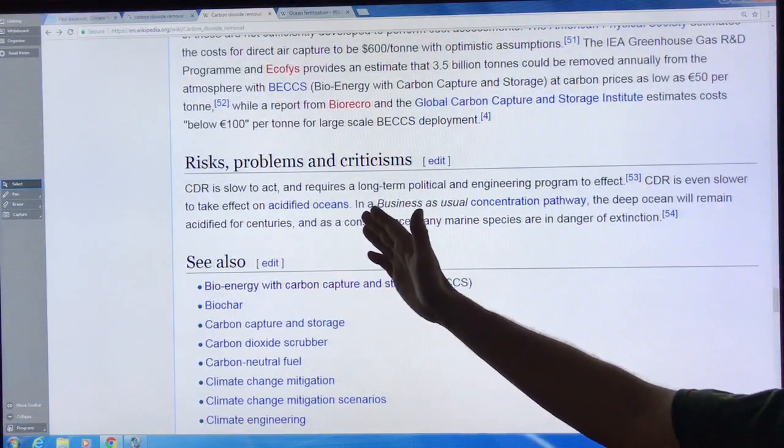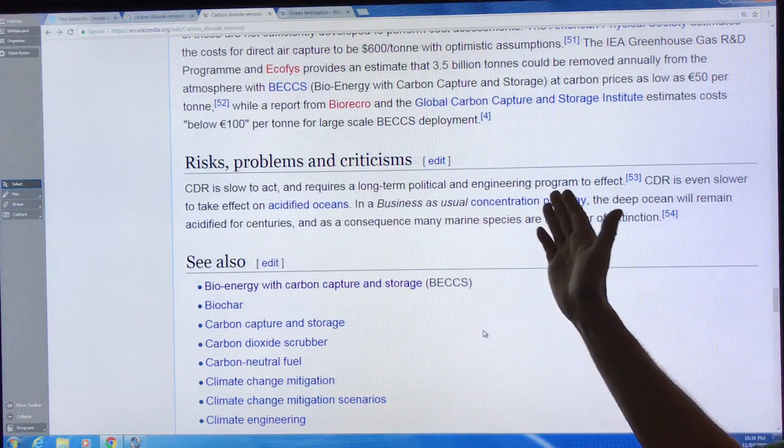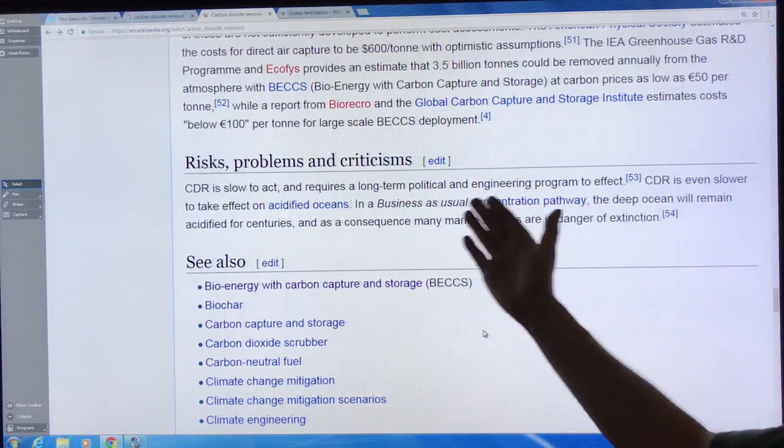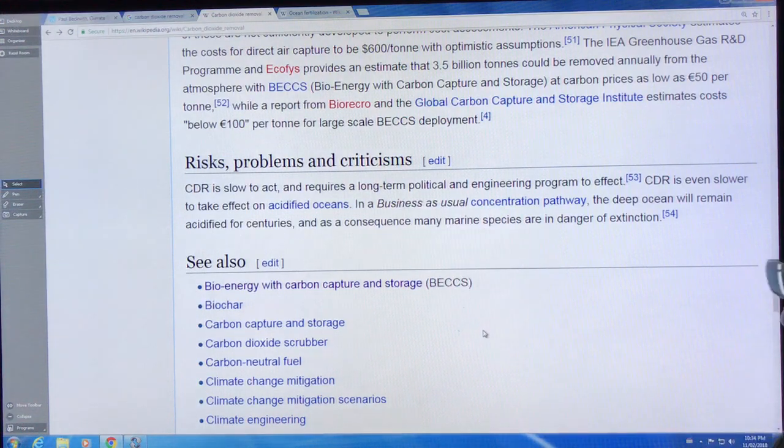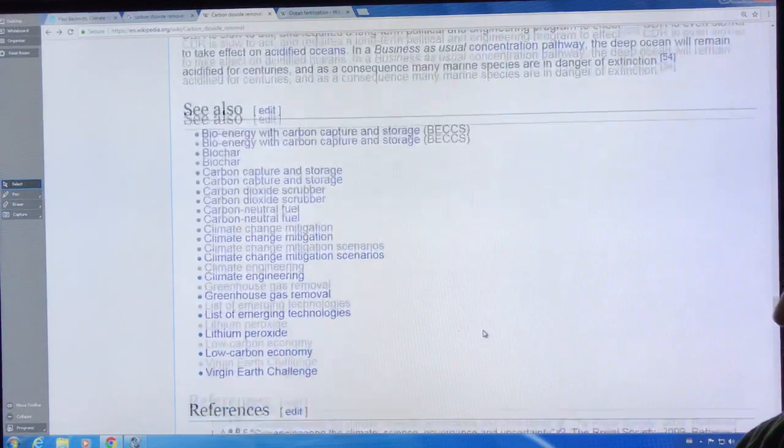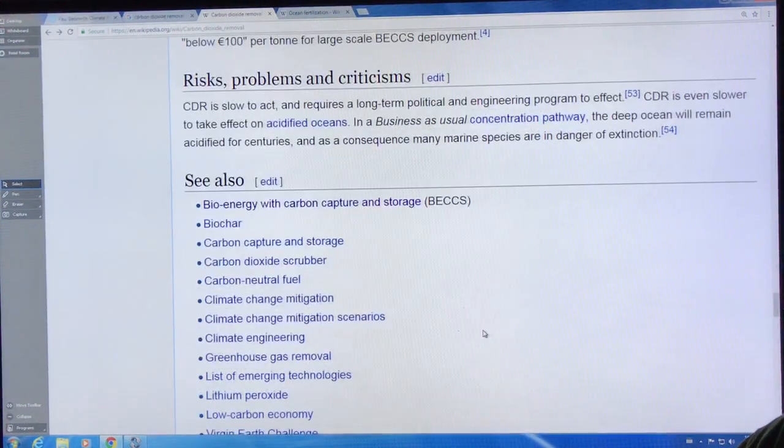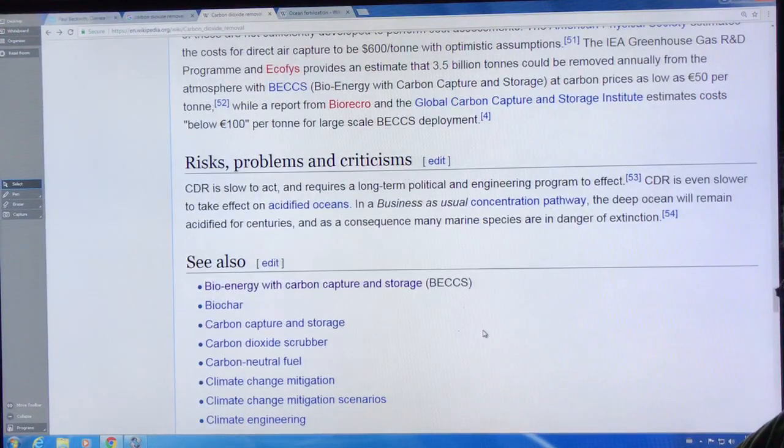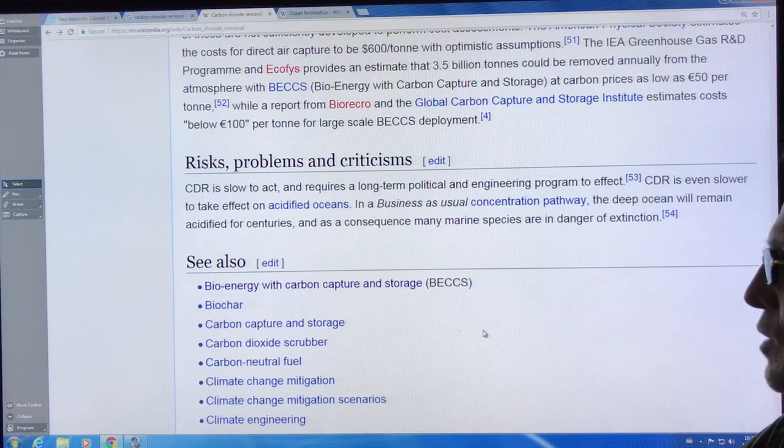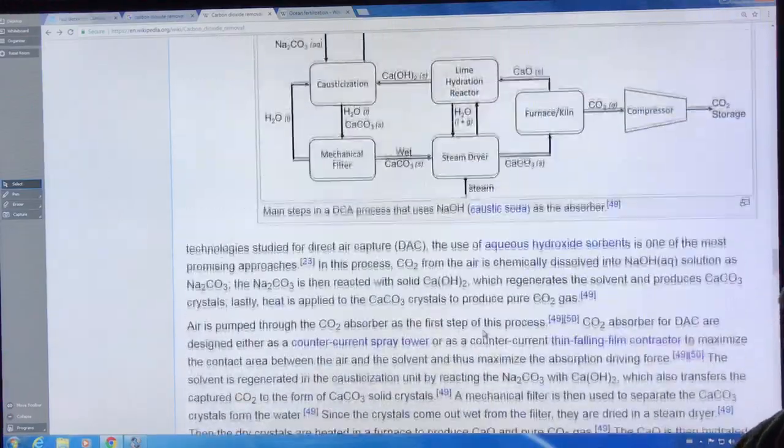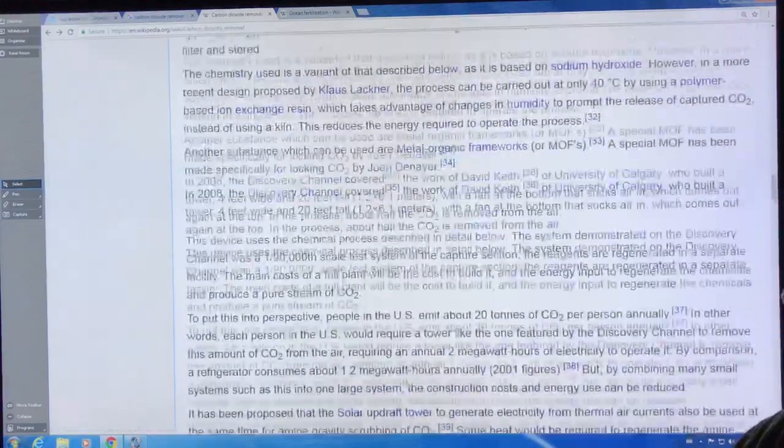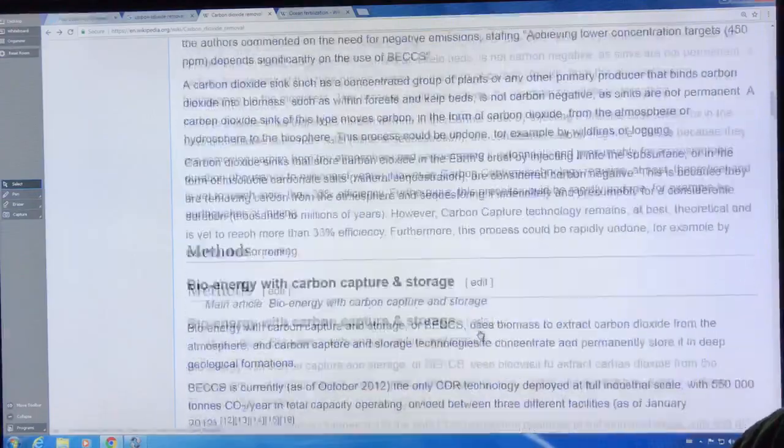It's amazing to me that even the IPCC with these assessments is neglecting the huge potential we have in the oceans. CDR is slow to act, they say, a long-term political and engineering problem, even slower to take effect on acidified oceans. I disagree with this. I think iron fertilization could be done in a matter of decades and draw huge amounts of CO2 out of the atmosphere. I'm going to talk about that in an entirely separate video.